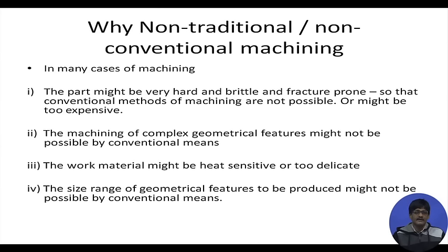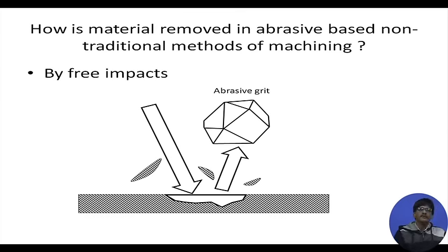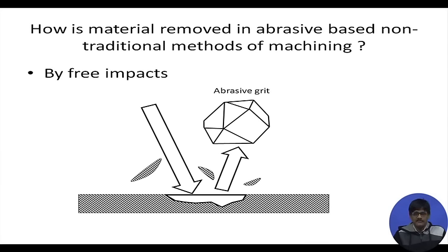There are many cases where conventional machining is definitely not the most appropriate method — it may be impossible or too expensive. When discussing abrasive-based non-traditional machining, material removal occurs differently. Here we show an abrasive grit, also called an abrasive particle, in magnified view. When this particle is accelerated to very high speed and made to impact against a brittle work material, it can remove material.